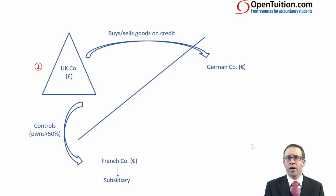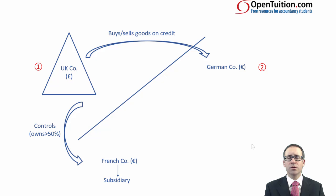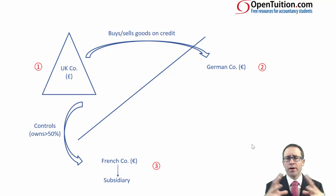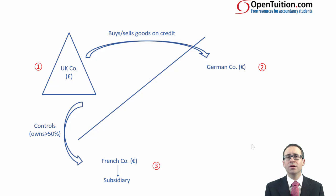To recap, there are three things covered in this chapter. First, we discuss the functional currency — the currency that the financial statements of an individual entity are prepared in, and why it's designated as such. Second, we look at transactions in a different currency to your functional currency — recording those in the individual company accounts. Third, we look at the consolidation of an overseas subsidiary. Each one in isolation isn't too technically difficult, but when we bring the three together it can prove quite a challenge.